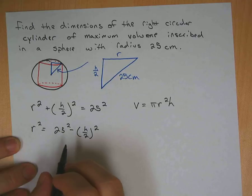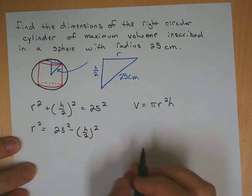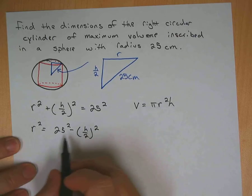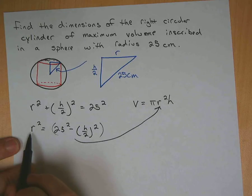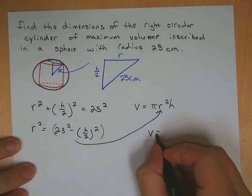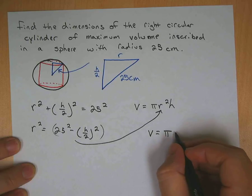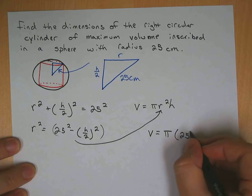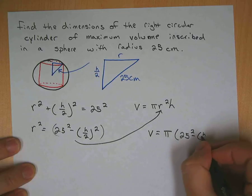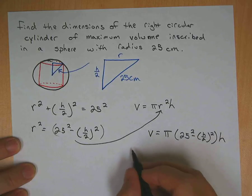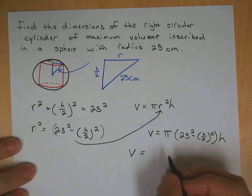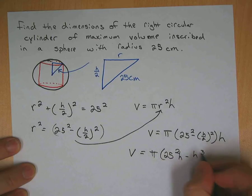And then I can take the volume formula and I can plug in right there in place of R squared, because that's what this is. So I would get V is equal to pi. Now I'll plug in here, I get 25 squared minus H over 2 squared H. Clean that up a little bit. I'll get volume is equal to pi times 25 squared H minus H cubed over 4.